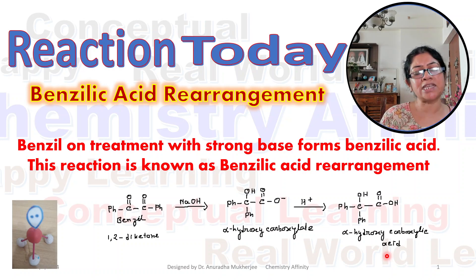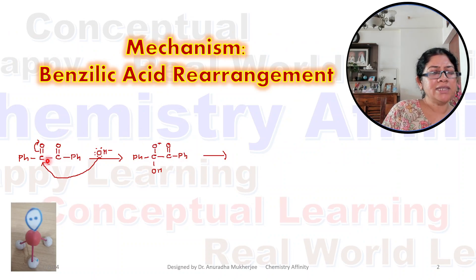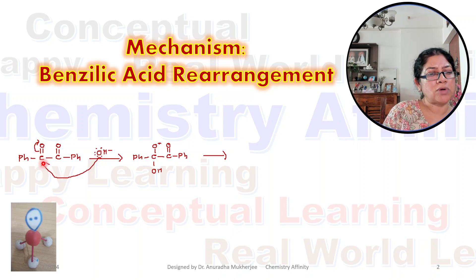Now let's explore the mechanism. Here we can see it's a 1,2-diketone, so both are carbonyl groups. The pi electrons move towards the oxygen, the carbon becomes positively charged, OH⁻ attacks the carbon — it's a nucleophilic addition — and we get this intermediate.